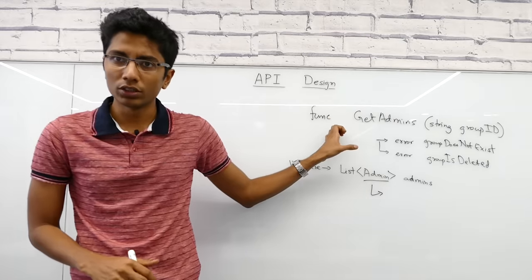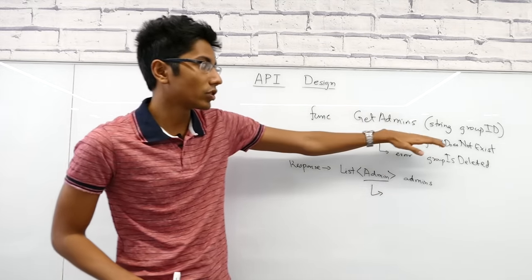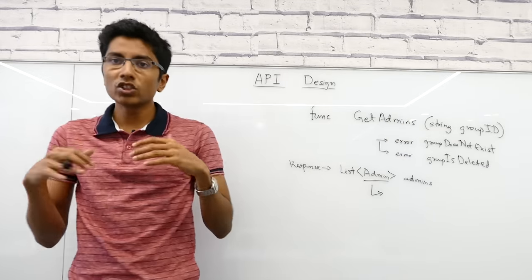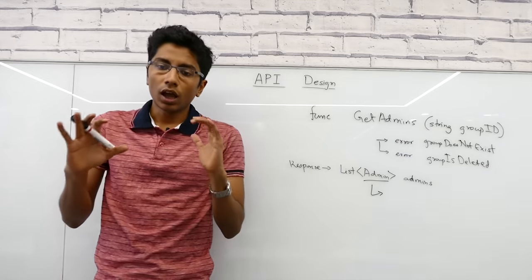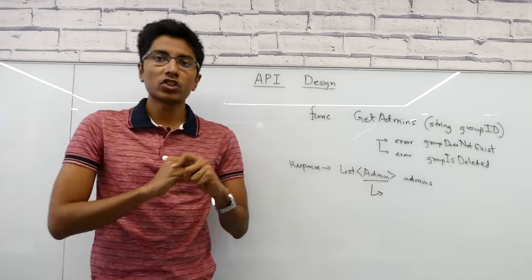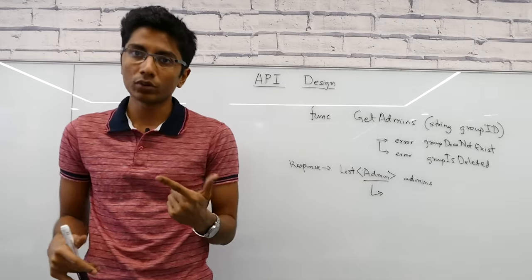As you can see, this is very similar to a function. You define the return type, possible errors, parameters, the name of the function. That's what an API in general is. It's a function that external people can call, and it's just the contract, not how you're going to do it, but what it is going to do. That's the important bit here.